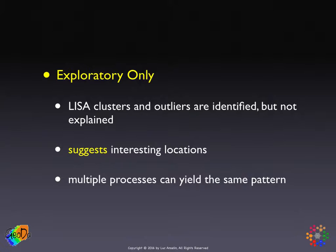It's important to keep in mind, as we discussed earlier for global spatial autocorrelation measures as well, that cluster detection is about pattern. Explaining what is actually going on is about process. Multiple processes can yield the same pattern, and from just identifying the pattern, you can't say everything about the process. We saw this in the context of pure versus apparent contagion.